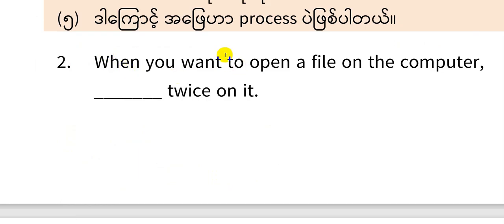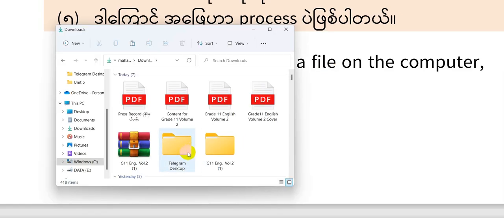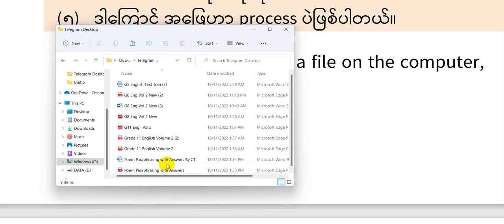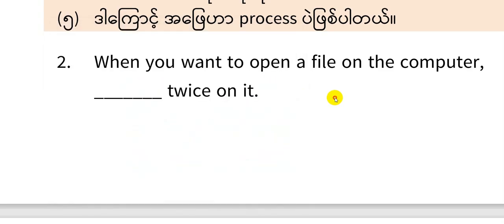Question 2: When you want to open a file on the computer, you need to blank twice on it. When you want to open a file on the computer, what action do you perform? You blank twice on it.